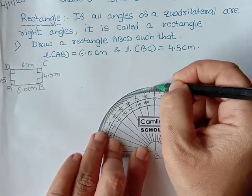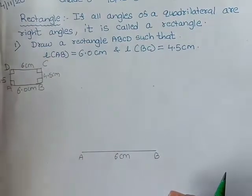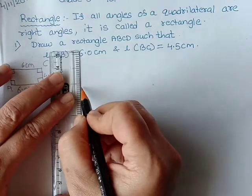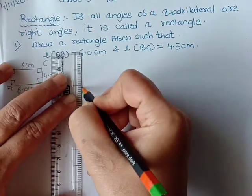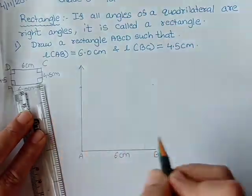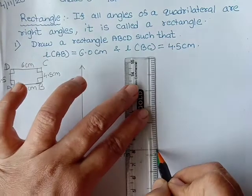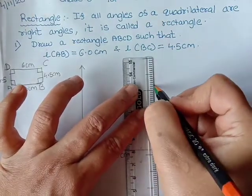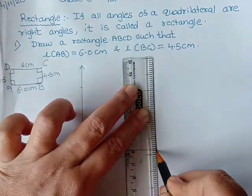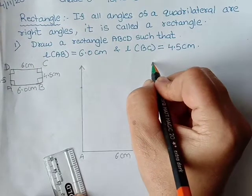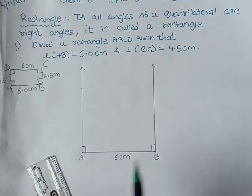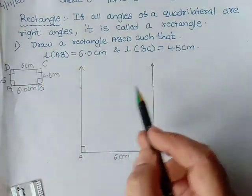Perfect, so this is also 90 degree. Now you just join it. Okay, so this is the line which you have drawn from here also. First see if it fits properly and then only draw a line. So this is 90 degree which is shown like this. This is also 90 degree.